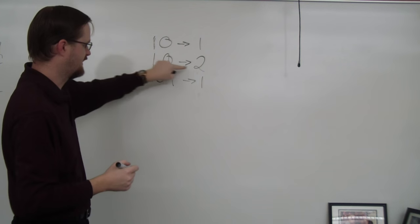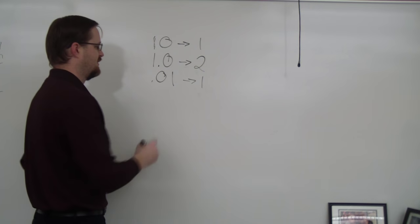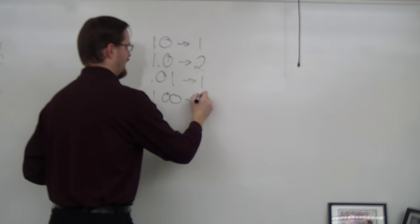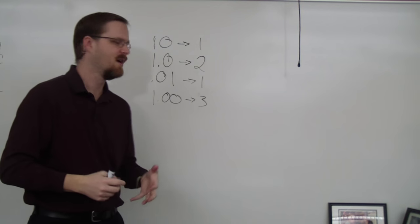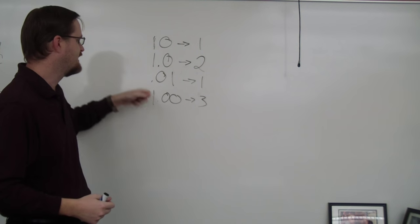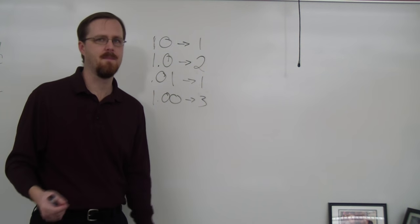And then to kind of expand on this concept, so 1.0 has two sig figs. If I do 1.00, that is three sig figs. And I know the common question here is, but why? This number is not any different than this number. It's the same thing. It's just one. True.